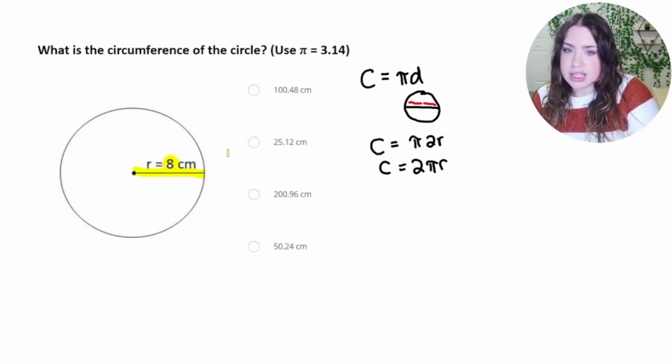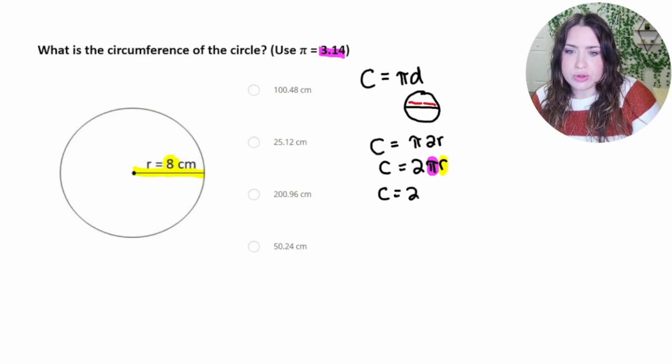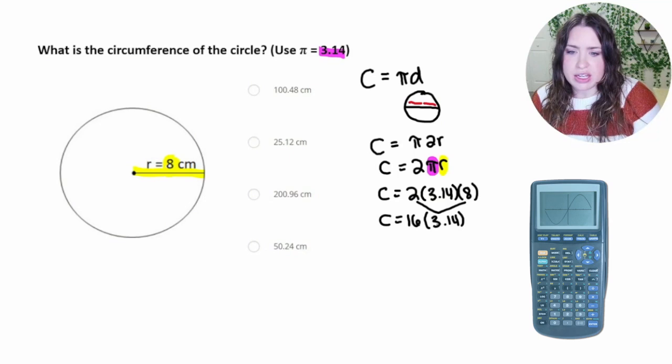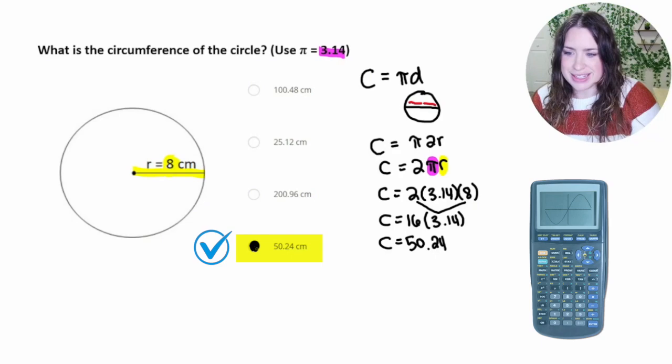So we're going to plug in 8 for the radius, and then we're going to be plugging in 3.14 for pi. So that's going to look like 2 times 3.14 times 8, which it's actually easier for my brain to just quickly do 2 times 8 to get 16, but then I'm definitely going to want to use that calculator and do 16 times 3.14, which is going to get you 50.24, which is this answer right here.